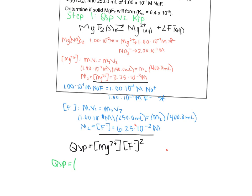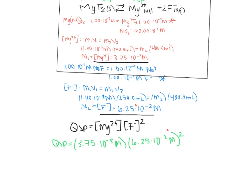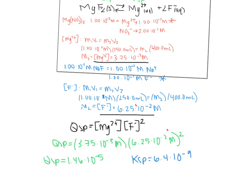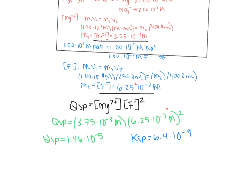Plugging in: QSP equals 3.75×10⁻³ times (6.25×10⁻²)², which gives QSP equal to 1.46×10⁻⁵. The KSP given for solid MgF₂ is 6.4×10⁻⁹. Since QSP is bigger than KSP — 10⁻⁵ is larger than 10⁻⁹ — a precipitate will form.